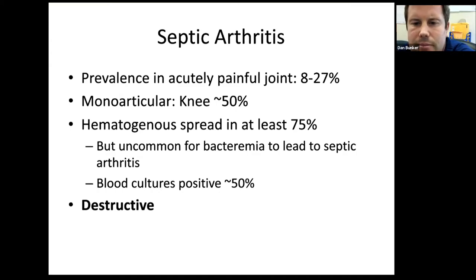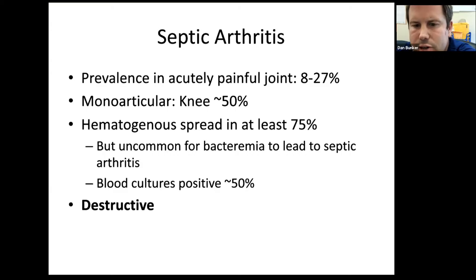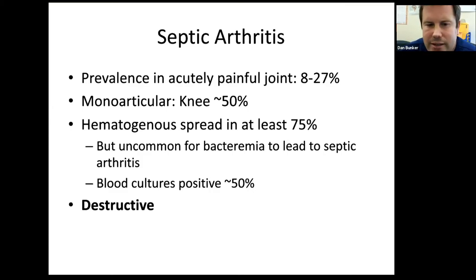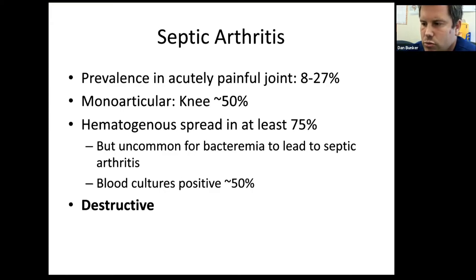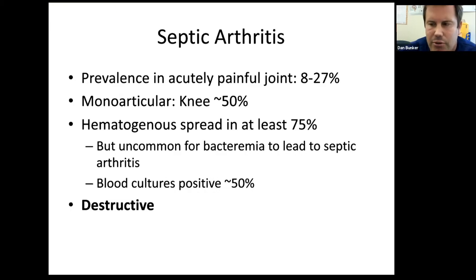Septic arthritis spreads from the blood into the joint space. The finding that 75% of cases are hematogenous comes from a study in the Northern Territory of Australia where fishhook injuries were common. The vast majority of septic arthritis we see is from hematogenous spread. Blood cultures are only positive about half the time depending on the bacteria, so a negative blood culture cannot rule out septic arthritis. Another mystery: we see patients with bacteremia all the time, but it leads to septic arthritis only a small percentage of the time — it's unclear why some patients develop it and others don't.